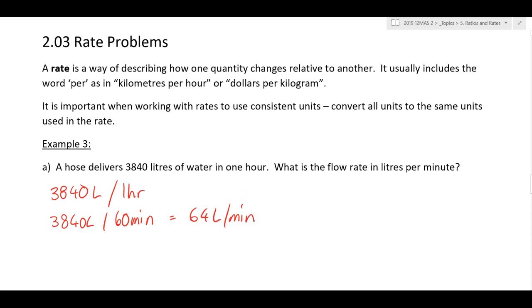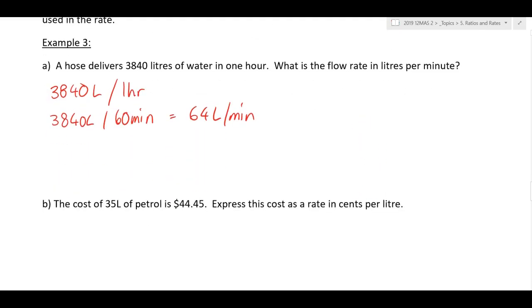We needed litres per minute, so I needed to find the number of litres and the number of minutes, and divide the number of litres by the number of minutes. In this case, it was 3,840 litres and 60 minutes. When I divide that, the quotient is 64 litres per minute.